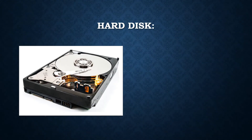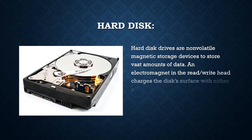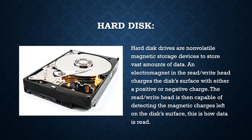Now let's study about hard disk. Hard disk drives are non-volatile magnetic storage devices used to store vast amounts of data. An electromagnet in the read-write head charges the disk surface with either a positive or negative charge. The read-write head is then capable of detecting the magnetic charges left on the disk surface. This is how data is read.